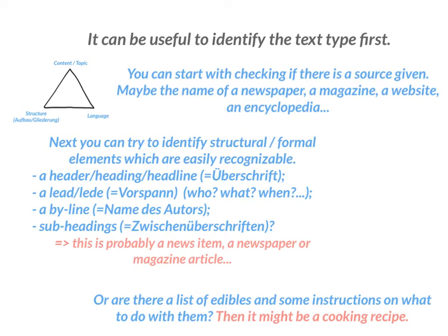You can start by checking if there is a source given when you want to identify the text type, because that would be a useful thing to start with. Maybe there is the name of a newspaper, a magazine, a website or an encyclopedia, and you have a first hint of what this non-fictional text could be.